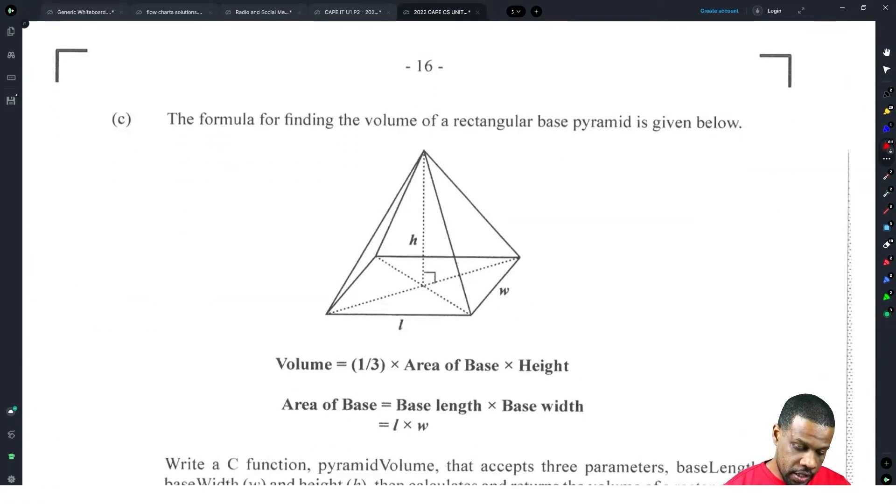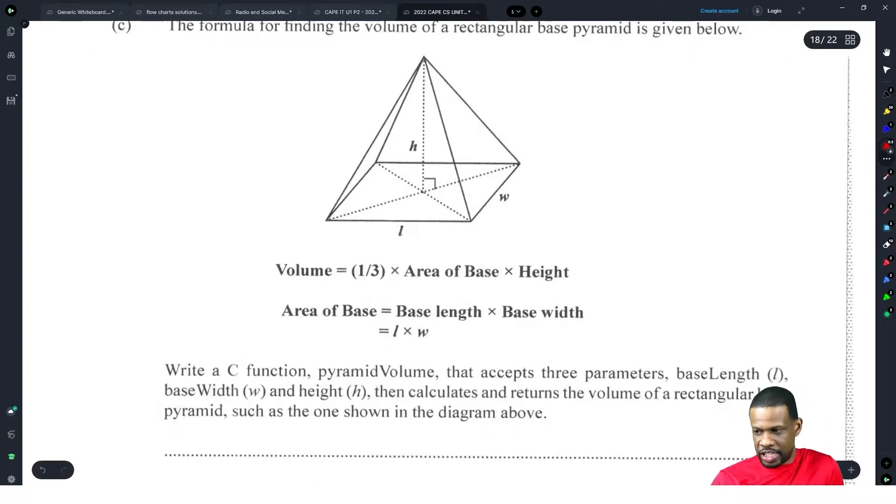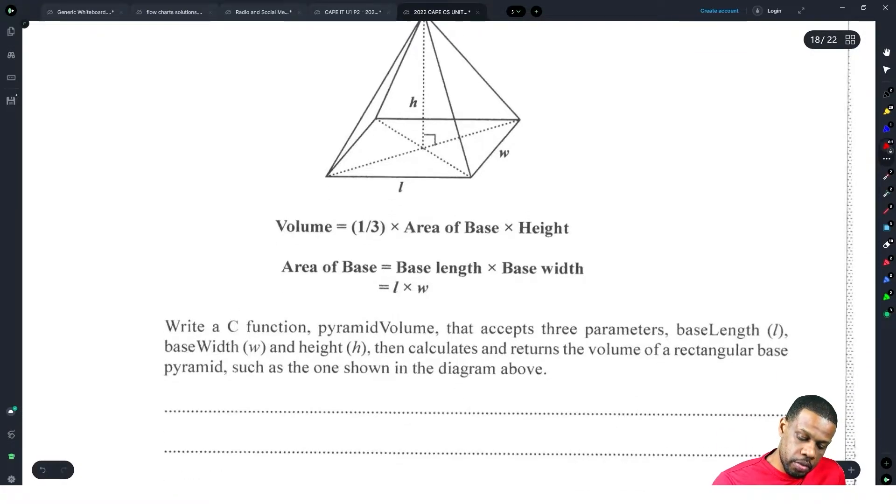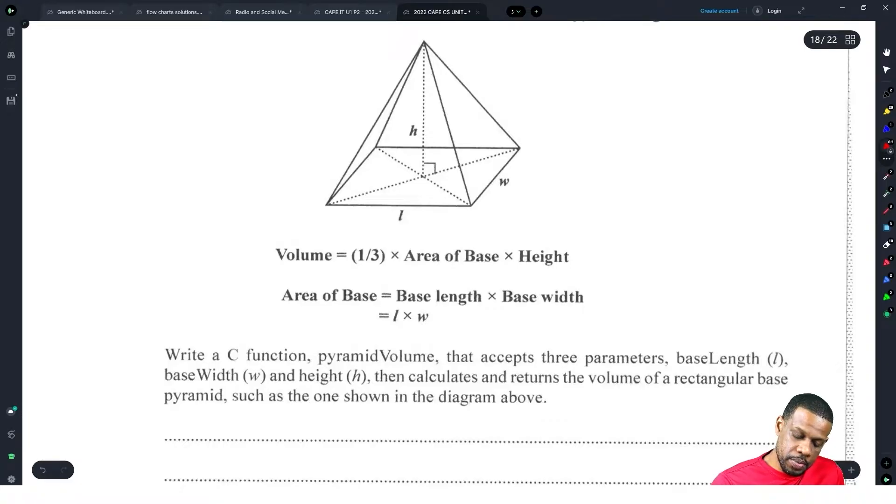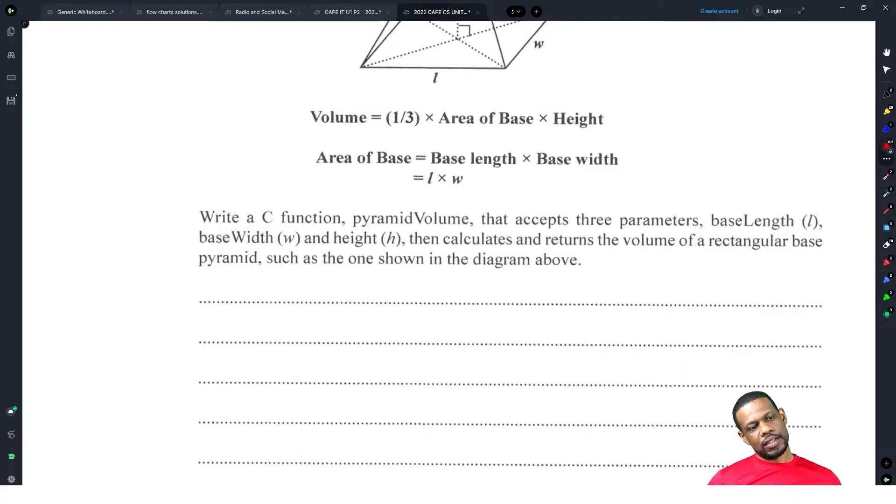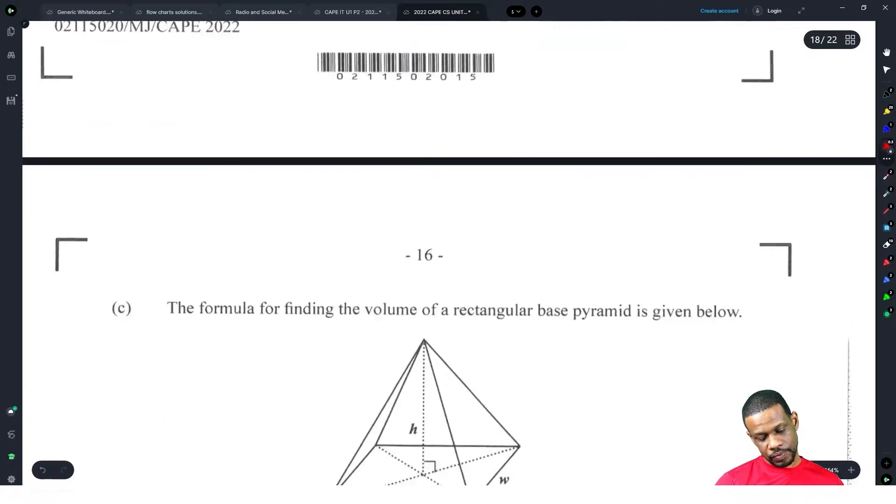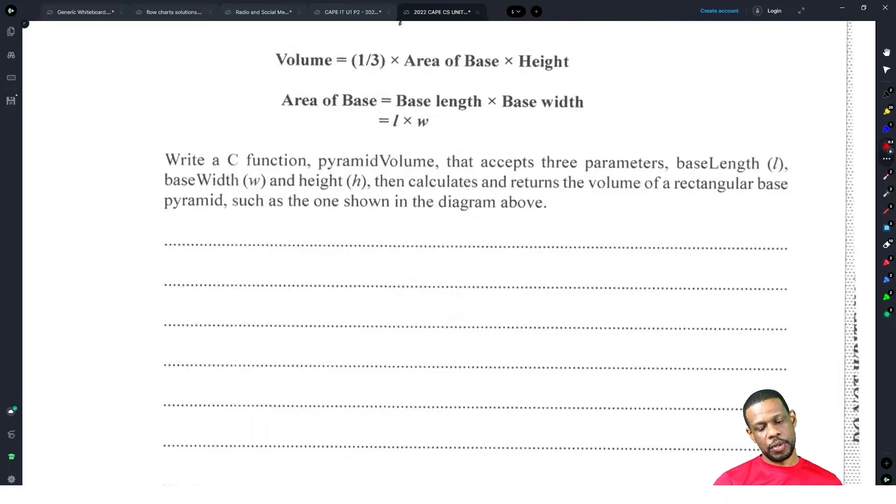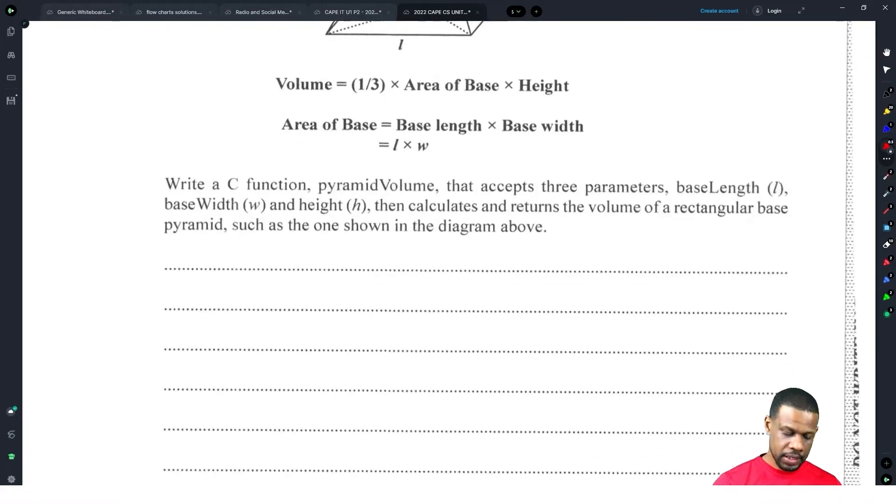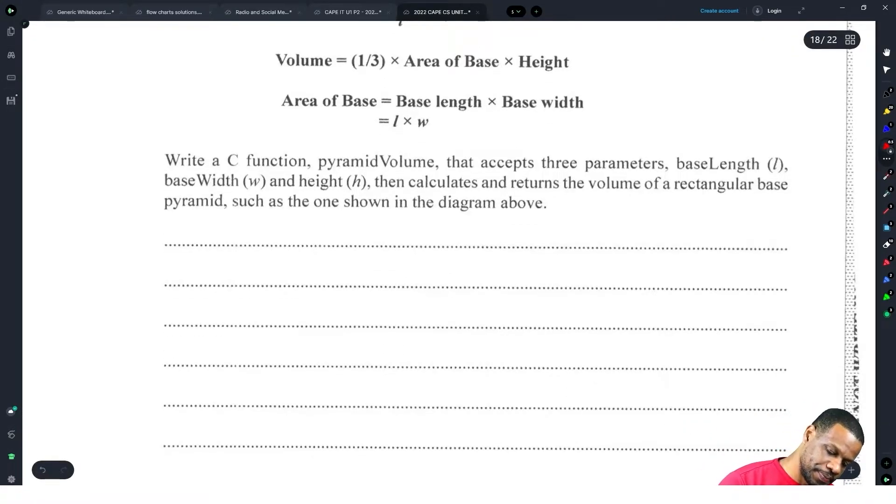Part C: The formula for finding the volume of a rectangular base pyramid is given below. Write a C function pyramid volume that accepts three parameters: base length, base width, and base height, and calculates and returns the volume. This is insulting. I now understand why children say the paper was easy.